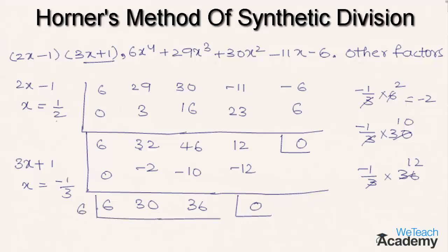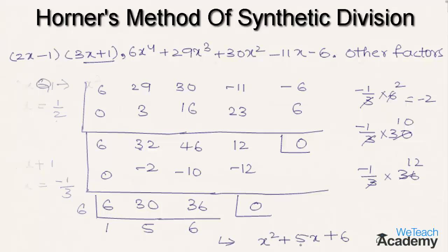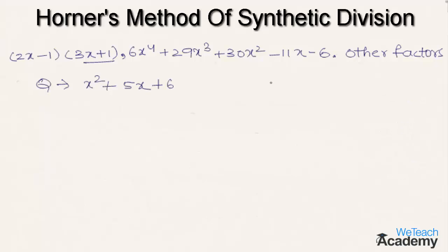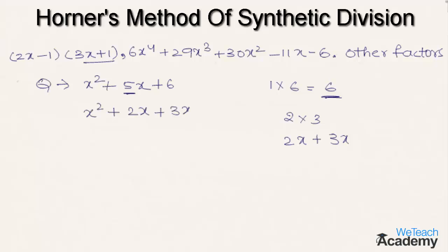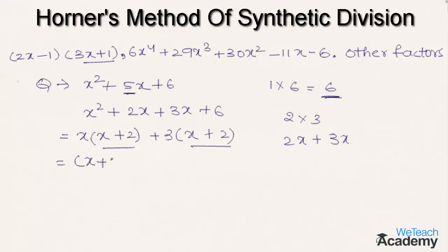Now let us divide all three remaining elements by 6: 6×1=6, 6×5=30, and 6×6=36. So we get the coefficients as x² + 5x + 6. To factorize, we multiply the coefficient of x² by the constant term: 1×6 = 6. The factors of 6 are 2 and 3; writing 2x + 3x gives 5x, the middle term. So x² + 5x + 6 = x² + 2x + 3x + 6 = x(x+2) + 3(x+2) = (x+2)(x+3).